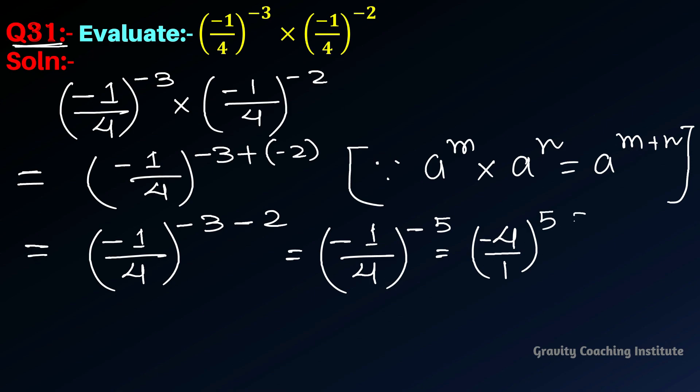We know that (a/b)^(-m) equals (b/a)^m. And 4 to the power 5 equals 1024.